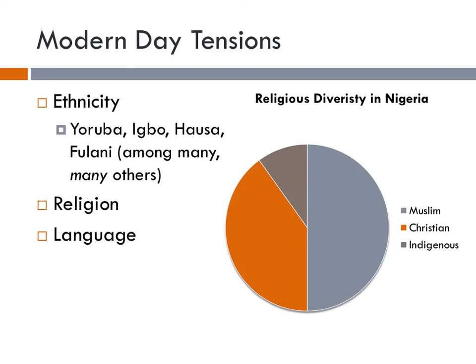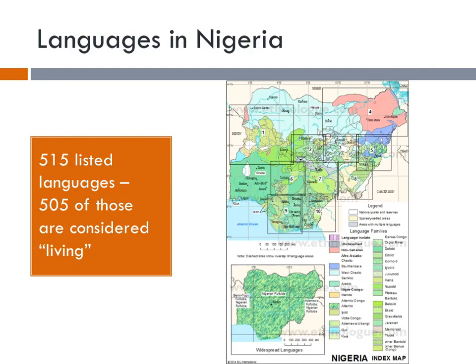The final piece contributing to modern-day tensions in this nation has to do with language. There are over 515 languages listed as being associated with the country of Nigeria, and 505 of those 515 are considered living languages. Just to illustrate — Latin, which is still used fairly widely in various contexts, is considered a dead language. This one nation has over 500 living languages, meaning they are spoken and used today in regular life. The map on the right of your screen illustrates how many languages there are in the nation, though it certainly is not an exhaustive list.